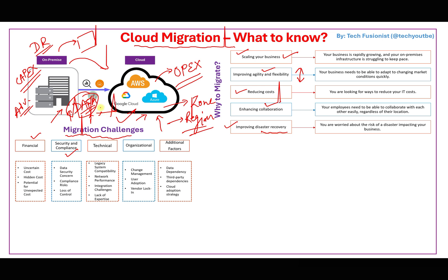Another challenge is lack of expertise in your organization — you need to hire the right people for the right work. There can also be vendor lock-in for applications or services running your business, which requires re-architecting your application with expert help. Additional challenges include data dependency, third-party dependency, and cloud adoption strategy.